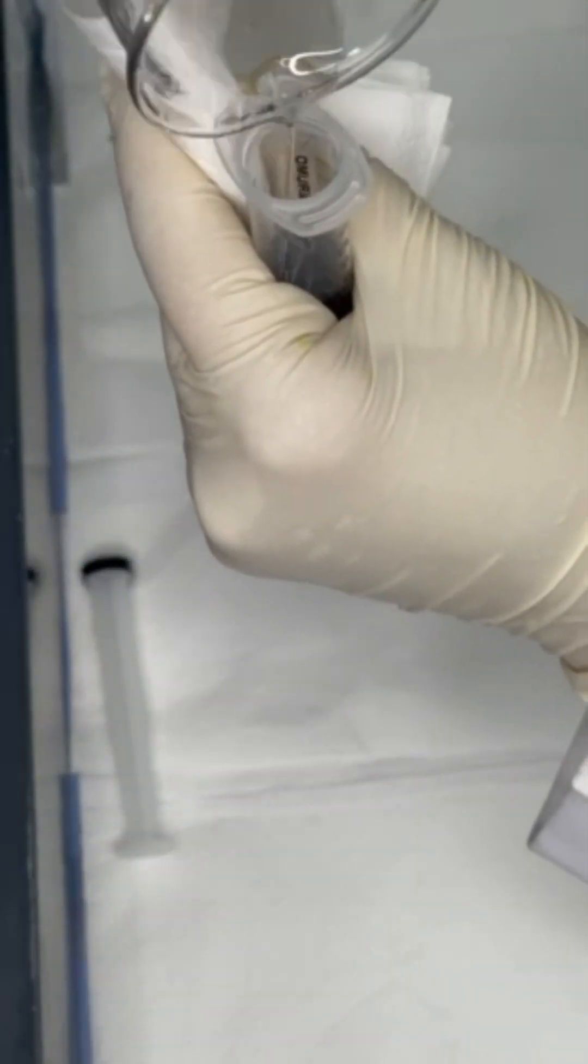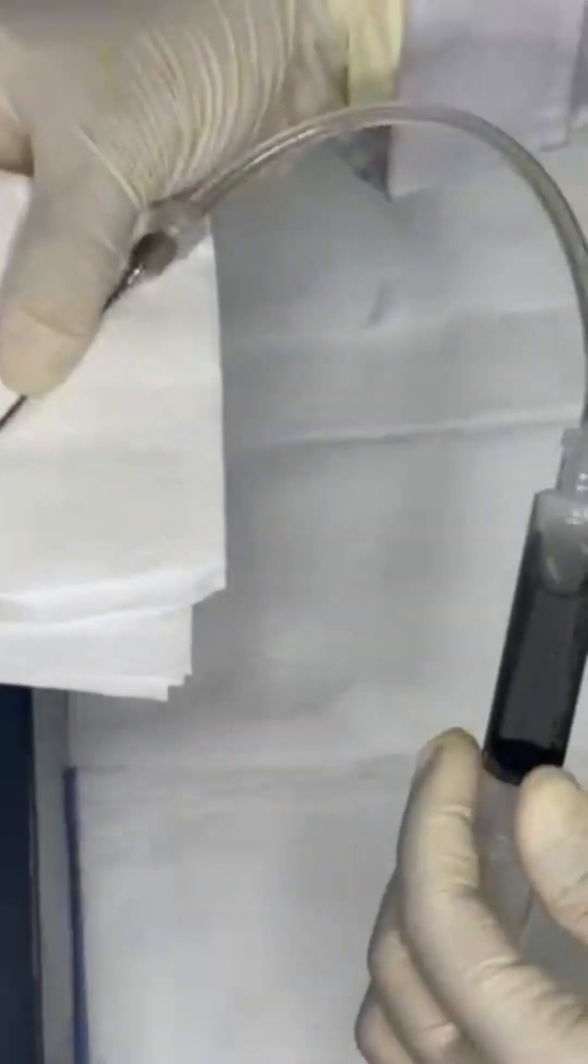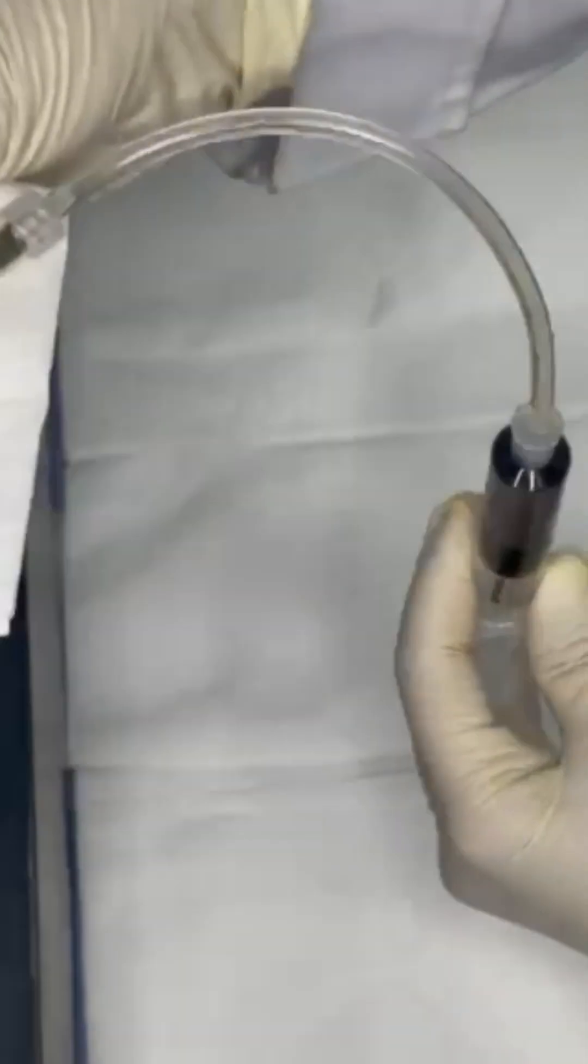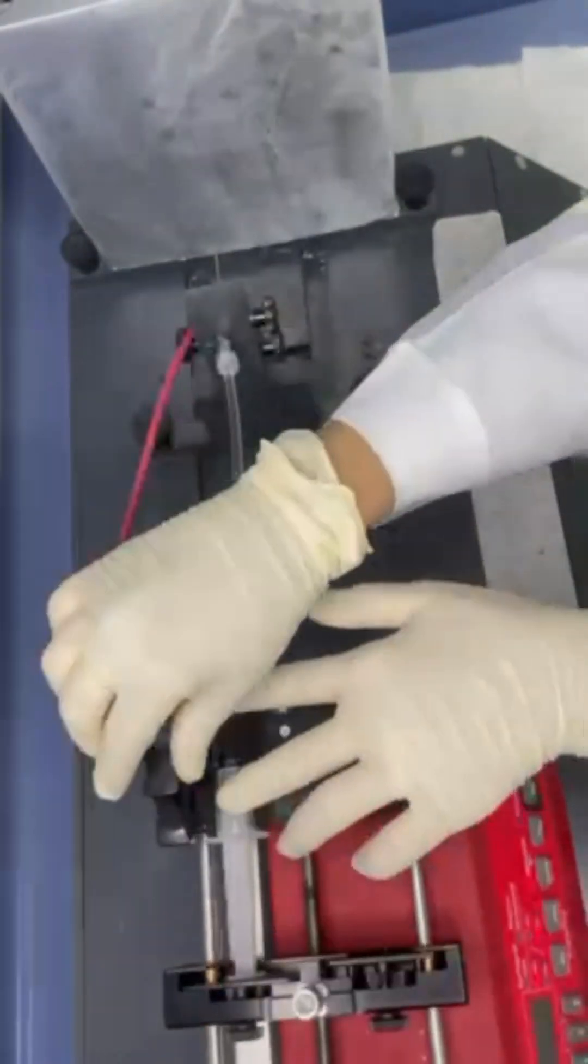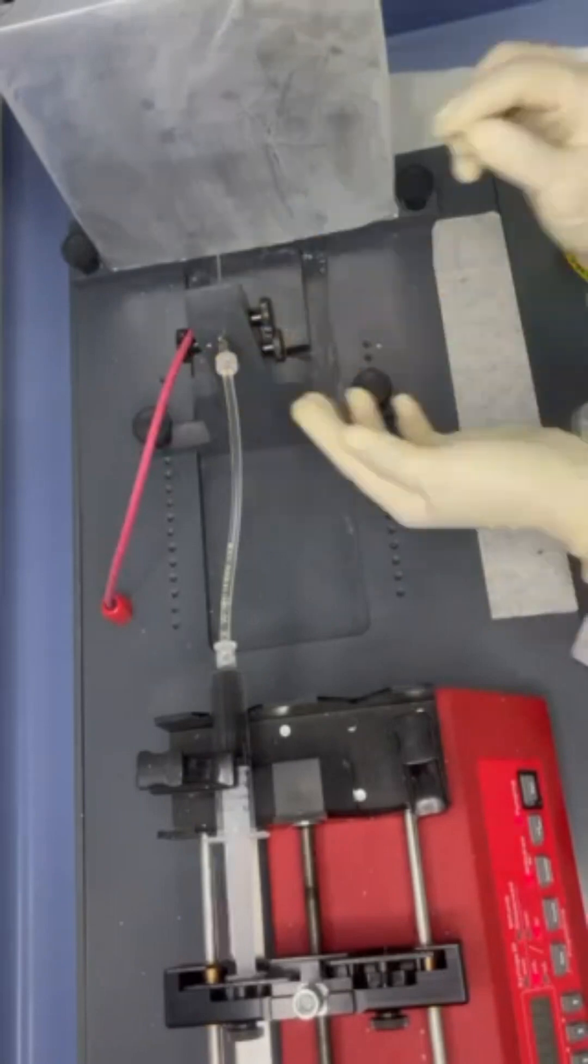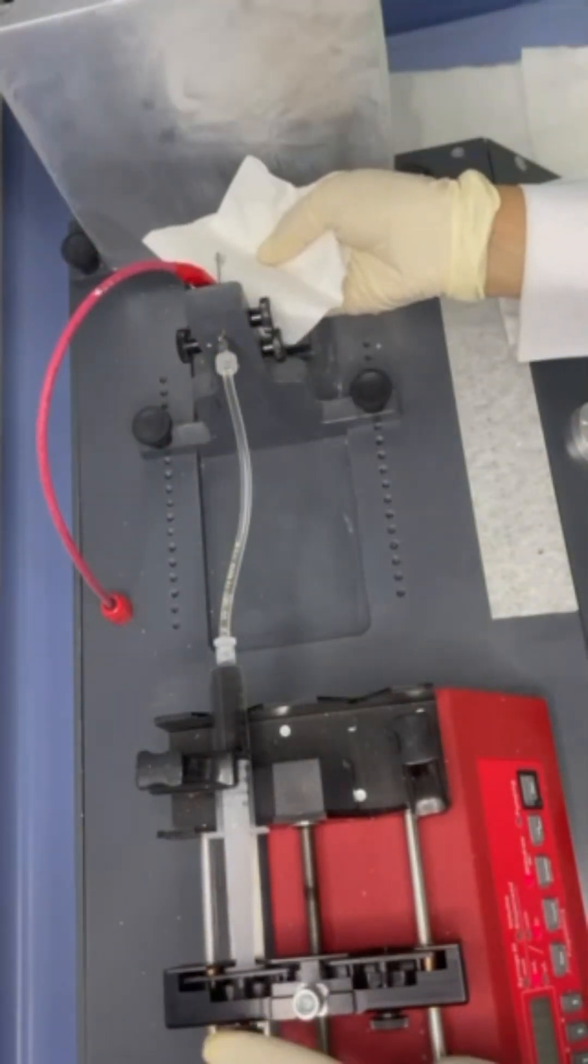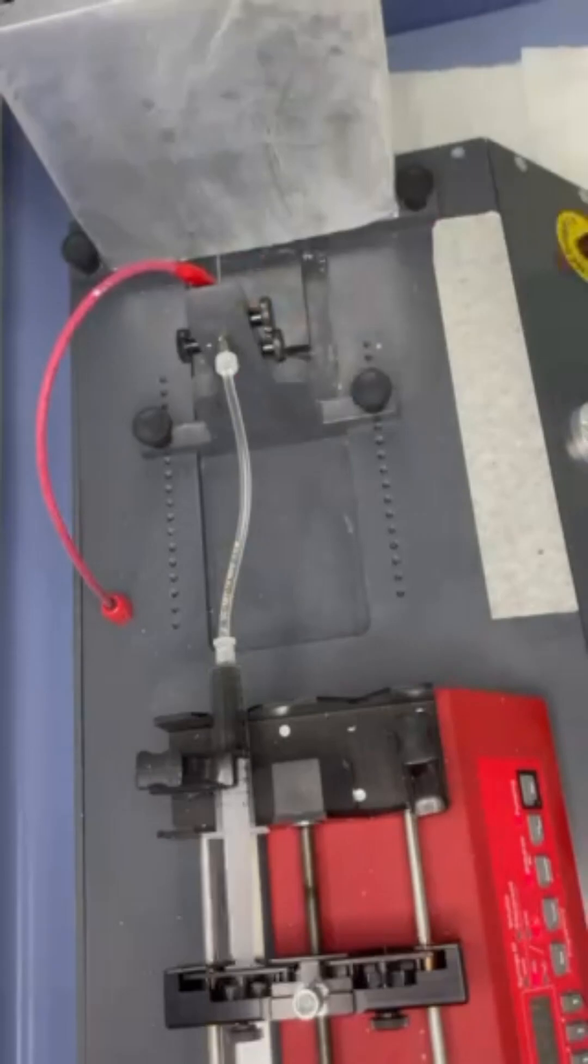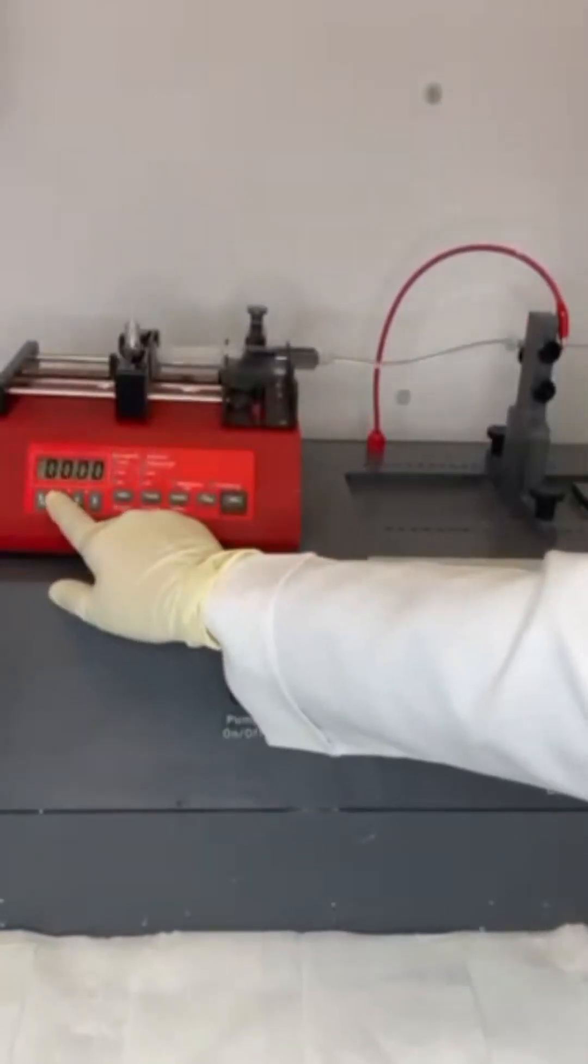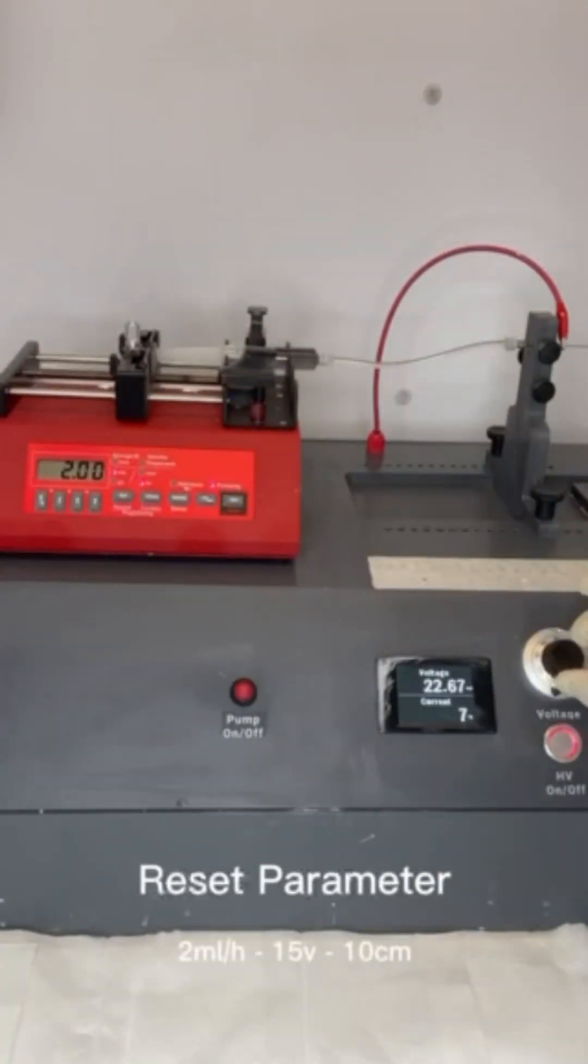Fill the needle with the mixture and make sure there are no bubbles. Put the needle and check the parameter.